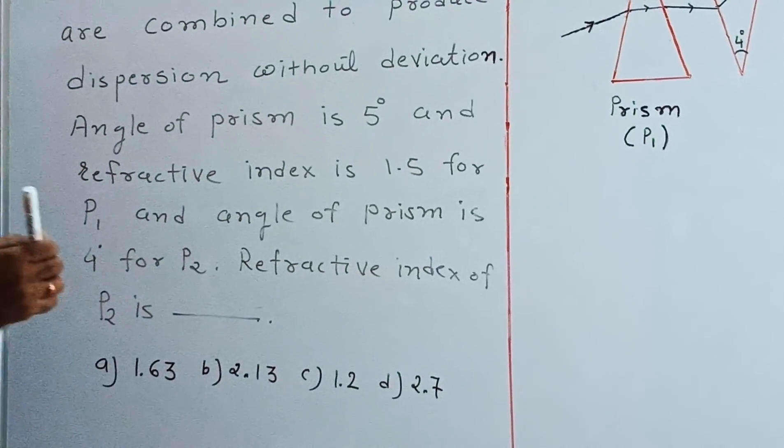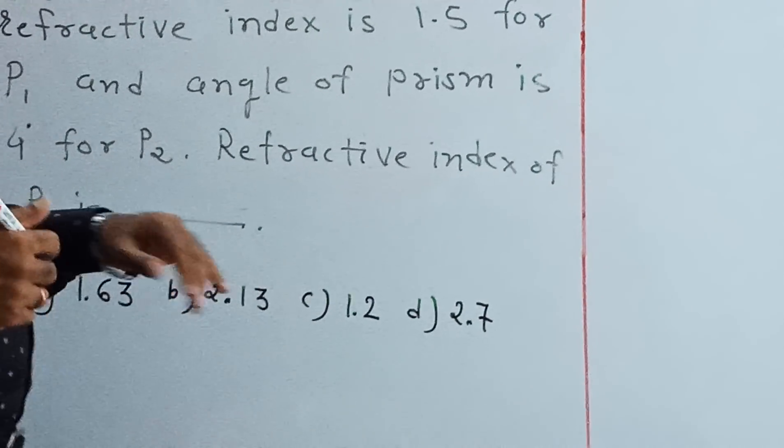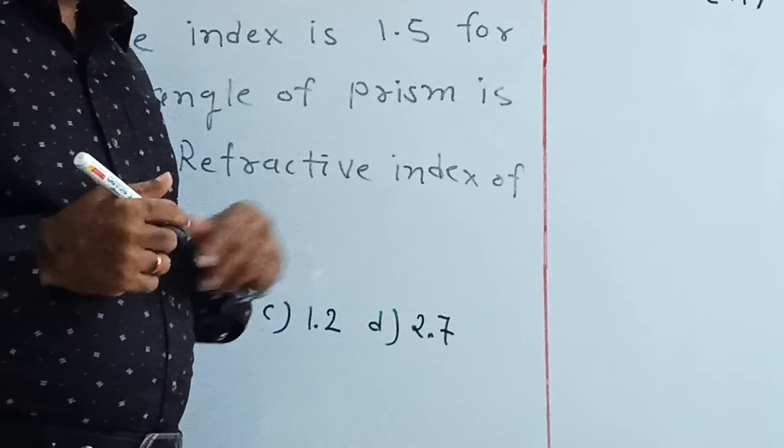The refractive index of P2 is blank. The answer is A) 1.63, B) 2.13, C) 1.2, and D) 2.7.